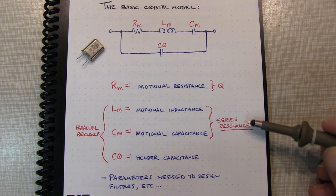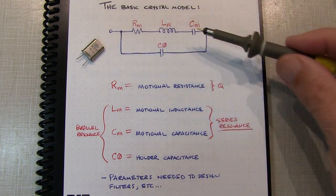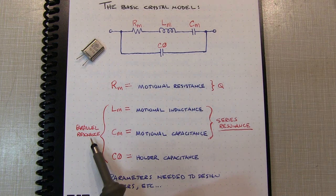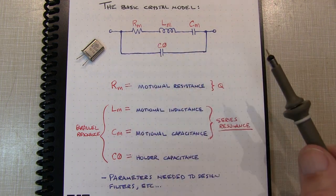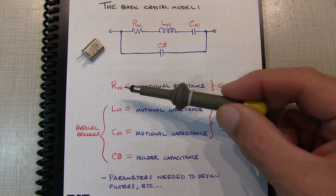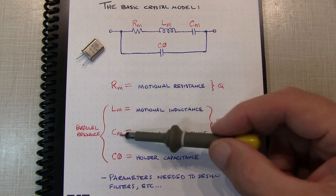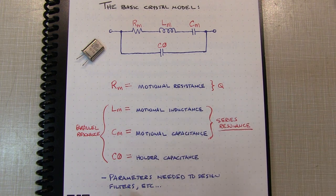At the series resonant frequency, the crystal exhibits its lowest impedance from one end to the other. At the parallel resonant frequency point, the terminal impedance of the crystal is very high. Generally, each of these parameters — particularly the motional inductance, capacitance, and holder capacitance — are needed when you're going to design filters, oscillators, and circuits like that.